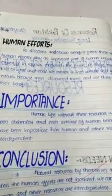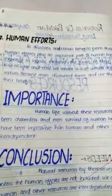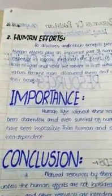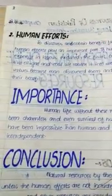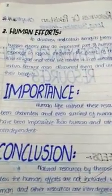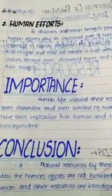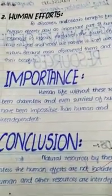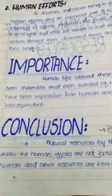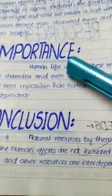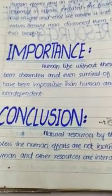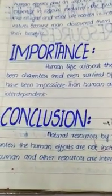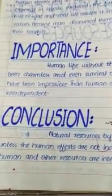'Human efforts' is the next heading, written by black marker — you can see that two lines are required for this black marker heading. Then another importance heading by blue marker, consisting of three lines — one, two, and three — three lines are required for the blue marker heading. In the end, the conclusion is there.